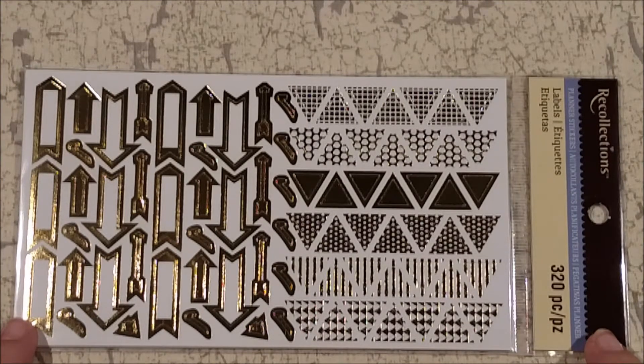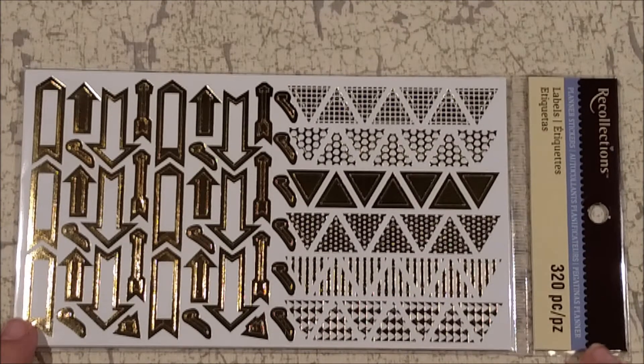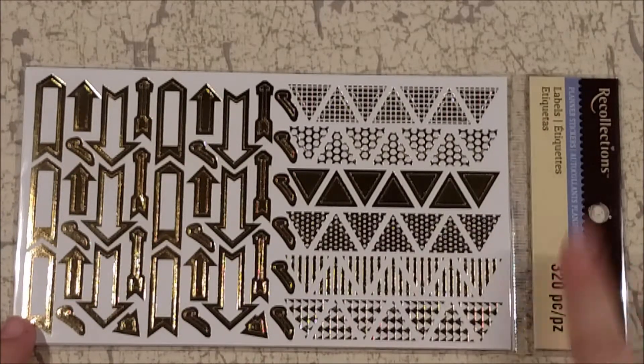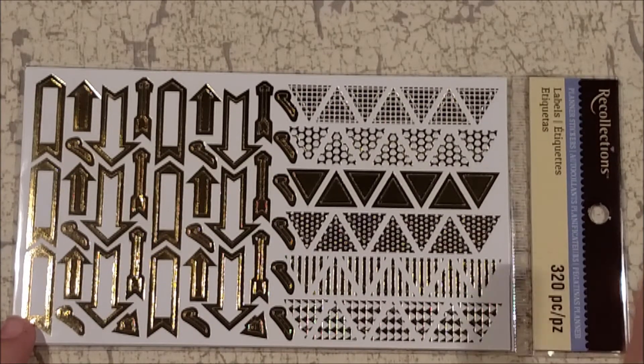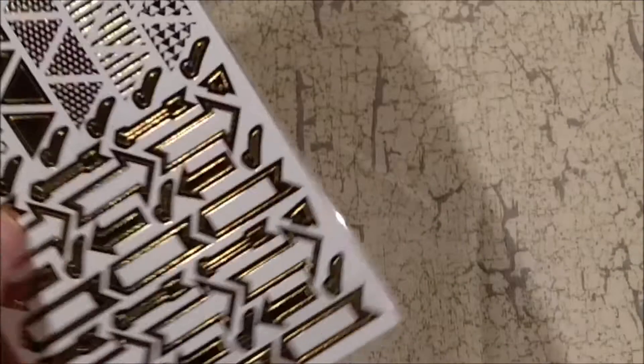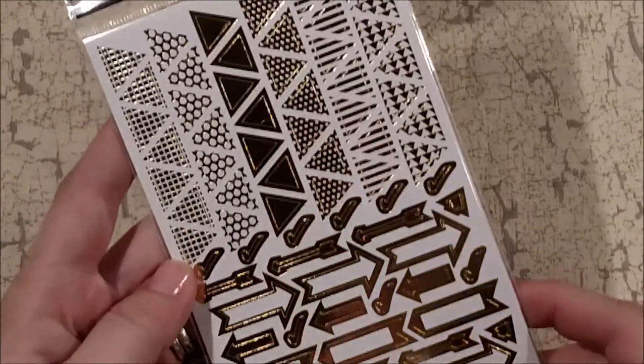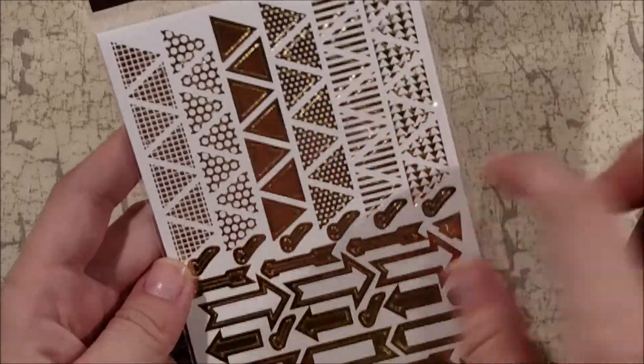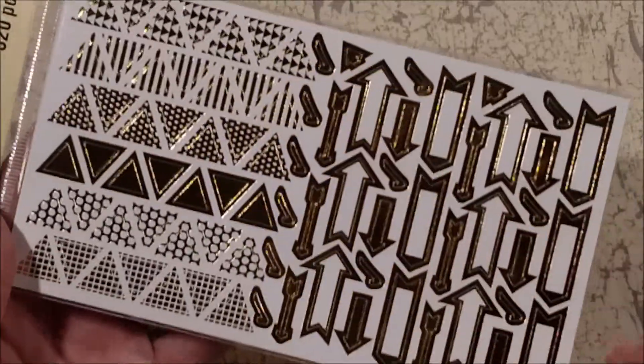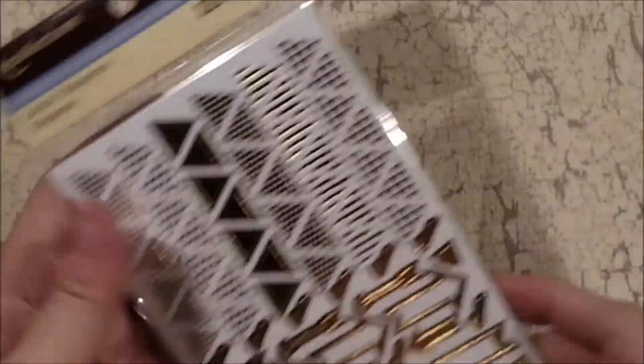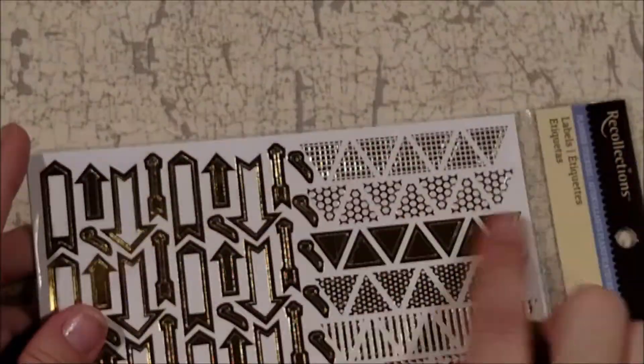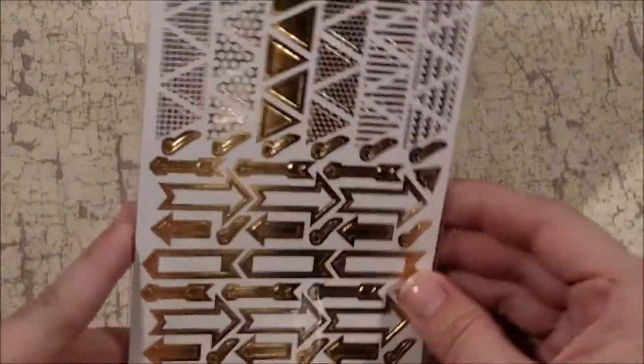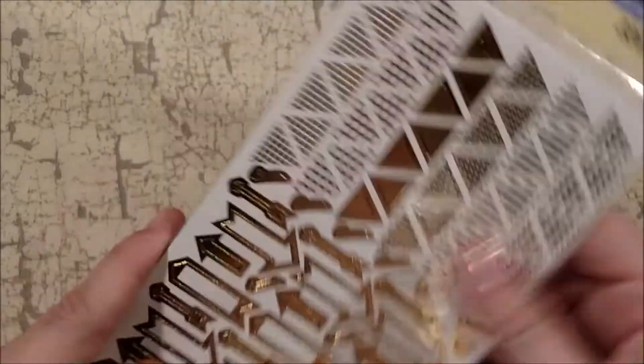Then the other recollections item I got that was 40% off was the 320 piece planner stickers which is the gold arrows. The gold arrows were $1.79 because they were on sale. And I always check for recollection stickers to make sure that the cuts are really really well done. And I decided to get this one without any of the actual printing so I can use these as bullets and banners and all that stuff. So I'm jumping on the gold foil train.